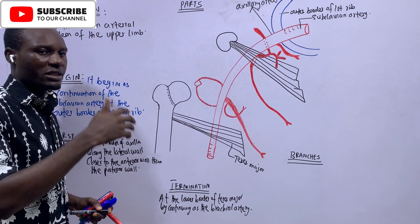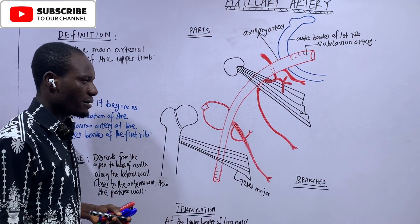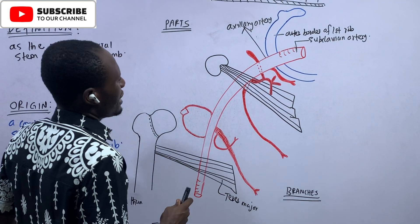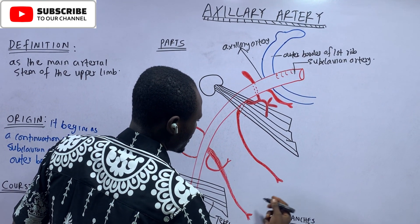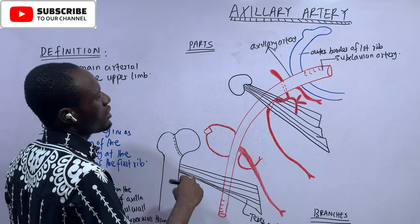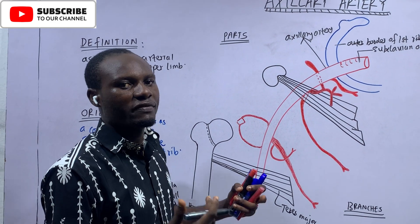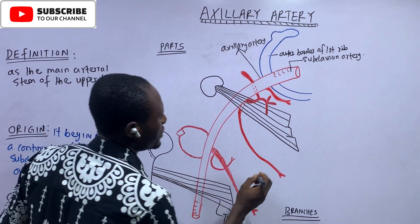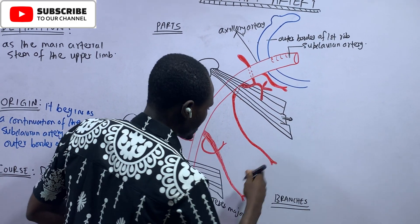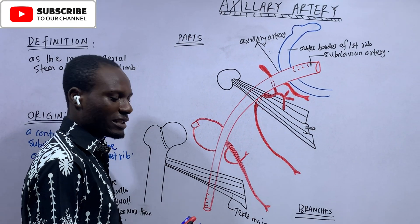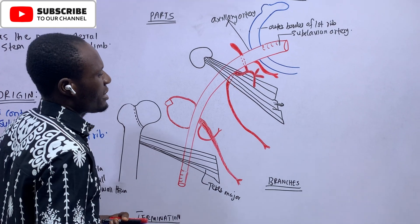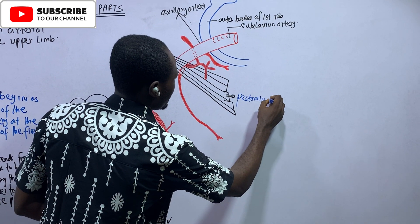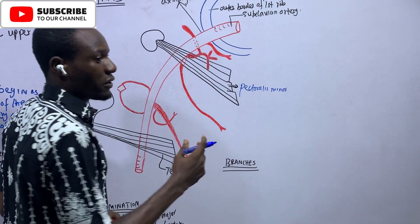It is the same artery with different names at different landmarks. Next, let us look at the various parts of the axillary artery. The axillary artery is divided into three parts by the pectoralis minor muscle. So the pectoralis minor muscle divides the axillary artery into three parts.